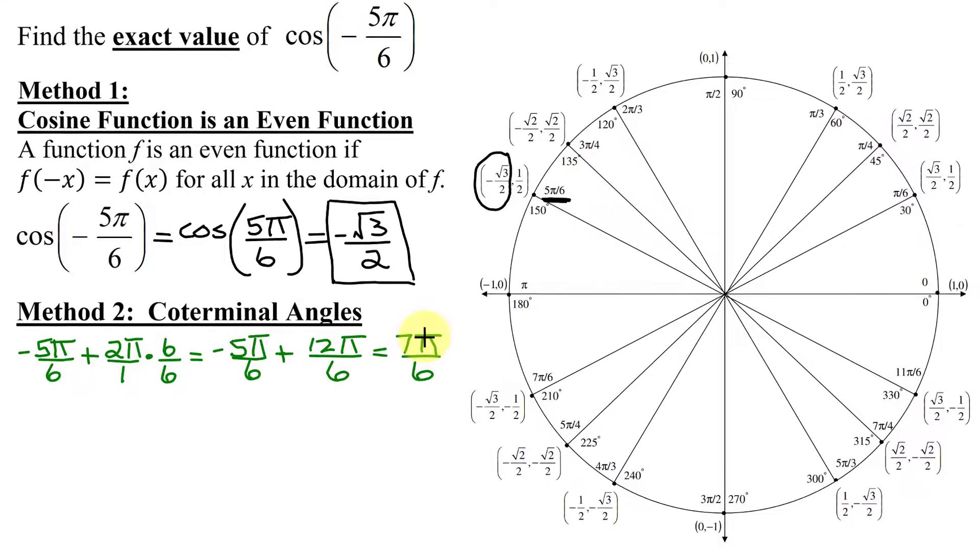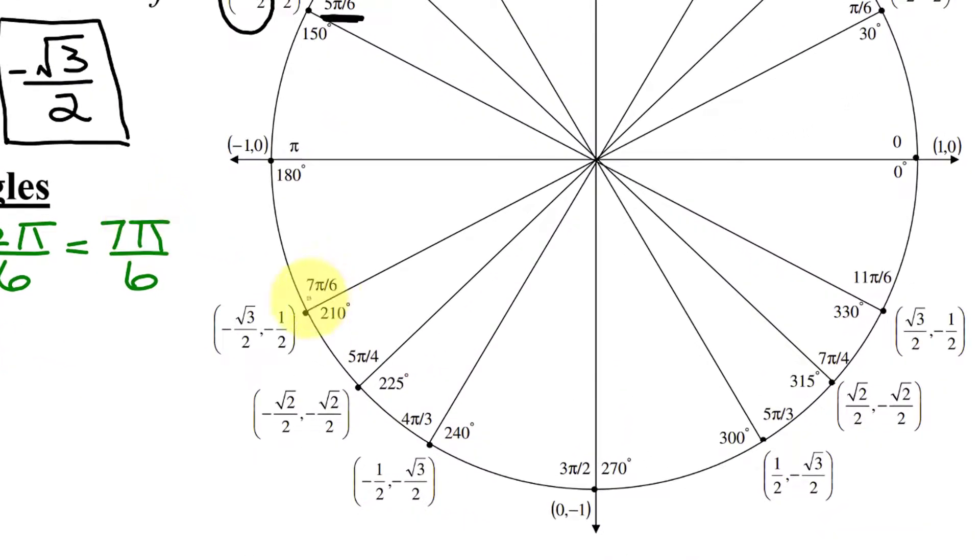Now is 7π over 6 on the unit circle? Yes, it is right here. Remember 7π over 6 is if I rotate in a positive direction like that. But negative 5π over 6 would be this angle here.